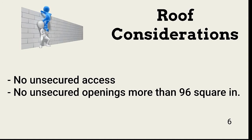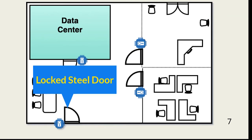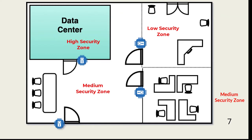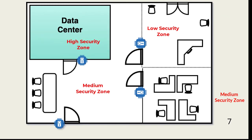All access doors and portals should be locked, and there should be no unsecured openings larger than 96 square inches. This is a ground floor floor plan. The back employee-only door is always secured with a cipher lock. It enters into a medium security zone. The front door is used for public access, which is restricted to a common welcome area separated from the rest of the building by a locked door. The only way a visitor gains access to other areas of the building is with an employee escort. This is a common and recommended design to limit non-employee access to all areas of the business.